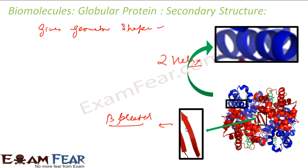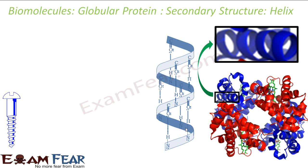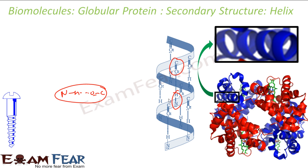Alpha helix is the most common secondary structure, where the polypeptide chain forms hydrogen bonds by twisting in the right-hand screw rule — it looks like a screw. This is the most stable secondary structure because of hydrogen bonding between C=O and N-H groups. The N-H of one residue and the C=O of the next form a hydrogen bond, creating the helix.